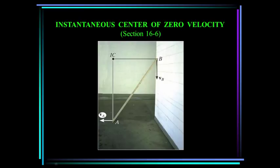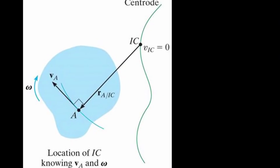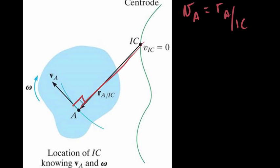In this case, the board is rotating about the point IC. To locate the instantaneous center, we use the fact that the velocity of a point on a body is always perpendicular to the relative position vector from the instantaneous center to that point. Case one is when the velocity v_A of a point A on the body and the angular velocity omega of the body are known. In this case, the IC is located along the line drawn perpendicular to v_A, and the velocity of A equals r_{A/IC} times omega.